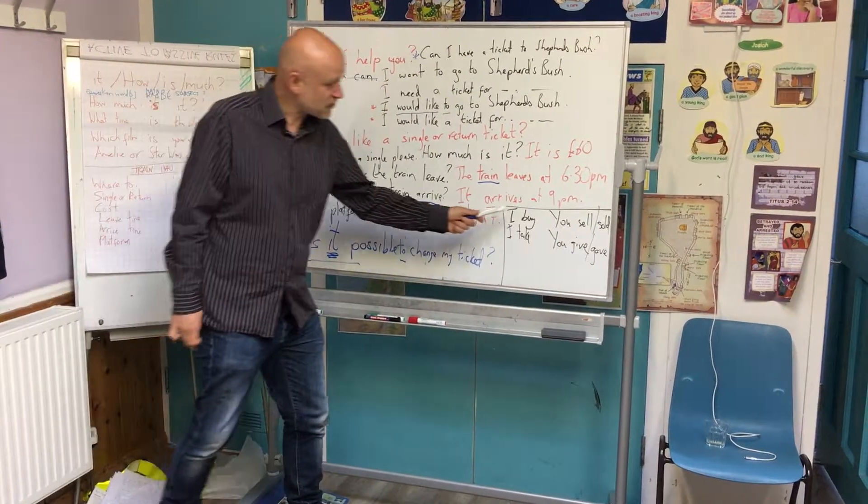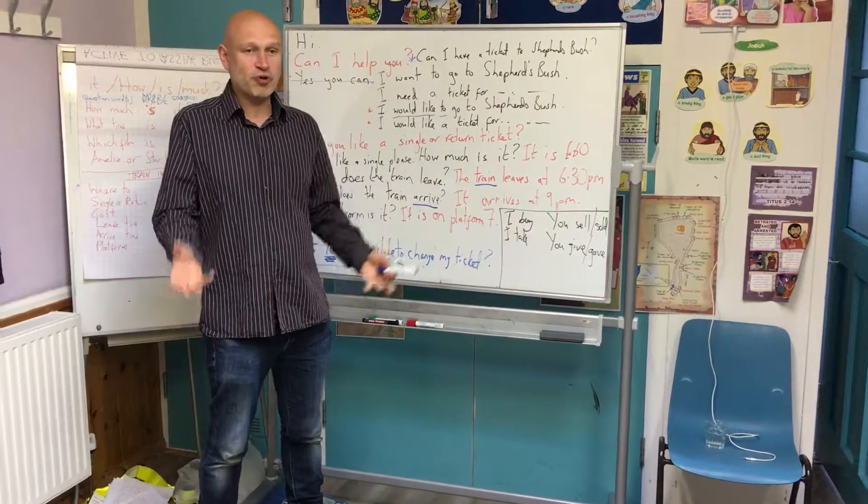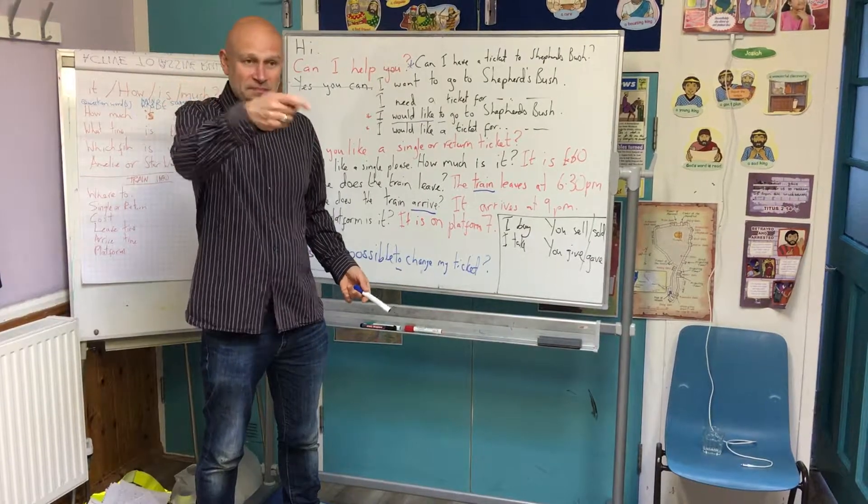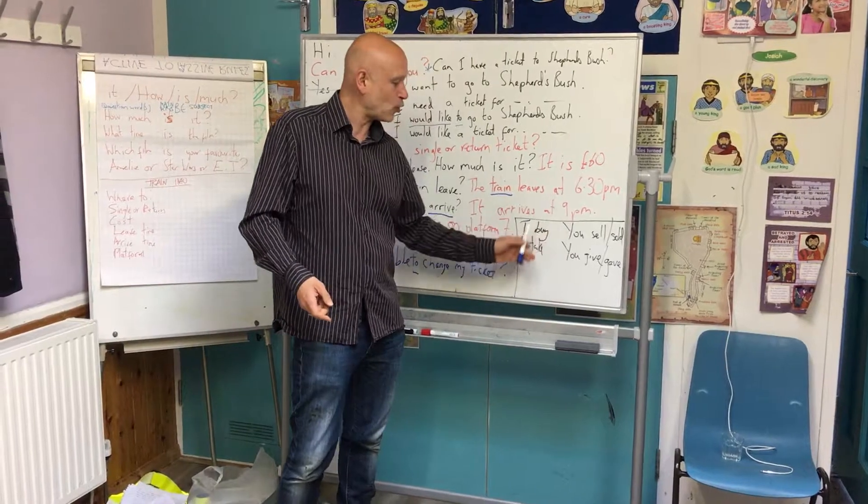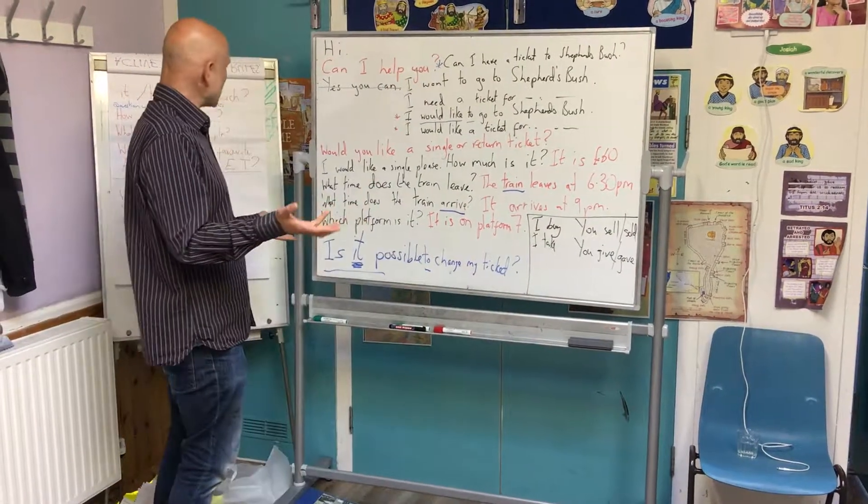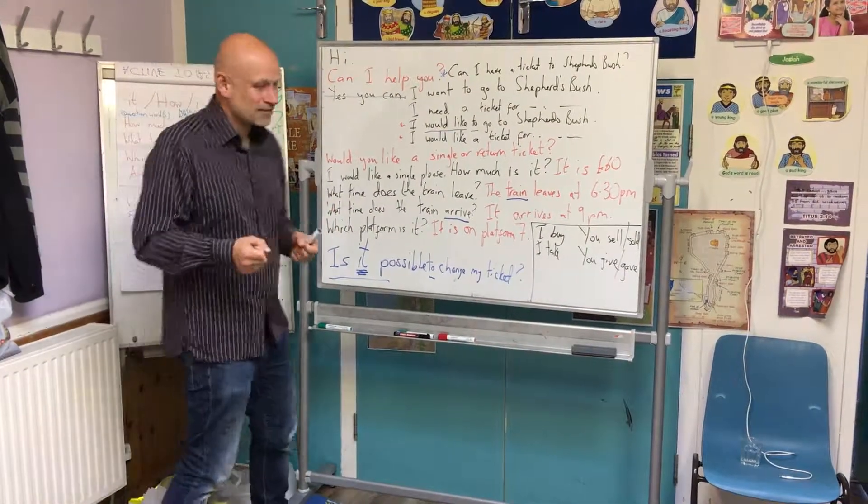Yeah, we looked at some of these words. There was a problem because somebody sold somebody the wrong ticket. So we were just looking at sell and sold, and give and gave, and buy and bought, and take and took. And that's basically it. Thank you.